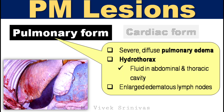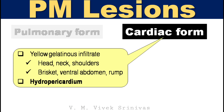Postmortem findings. In the pulmonary form, severe diffuse pulmonary edema, hydrothorax — that is fluid in the abdominal and thoracic cavity — and enlarged edematous lymph nodes are observed. In the cardiac form, yellow gelatinous infiltration at the head, neck, shoulders, brisket, ventral abdomen, and rump regions, and hydropericardium, are observed.